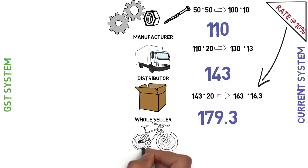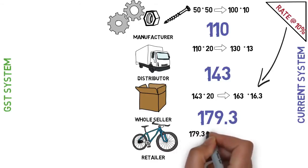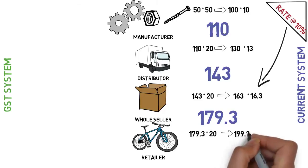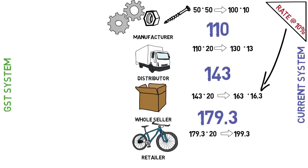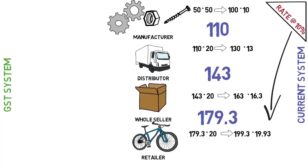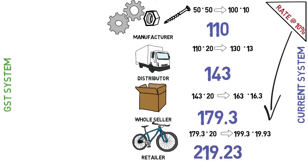The retailer adds 20 rupees profit, and the price becomes 199.3. The consumer buys this product from the retailer by paying 10 percent tax on 199.3, that is 19.93 rupees. So the final consumer price is 219.3 rupees. This is how the current taxation system works in India.